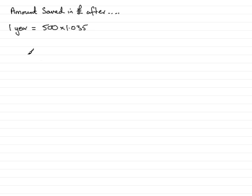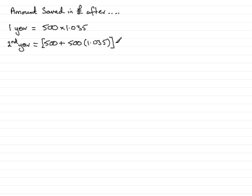Now we go on to the amount in the second year. He puts in 500 pounds, and this is added to the amount he had at the end of the first year — so he had 500 times 1.035. That's the amount he now has at the beginning of the second year, and throughout the year it accumulates 3.5%. Multiplying by 1.035, we get the amount at the end of year two. Expanding this gives 500 times 1.035, plus 500 times 1.035 squared.